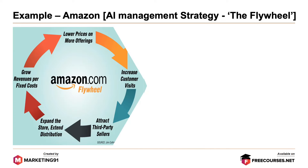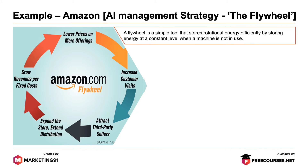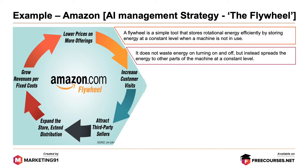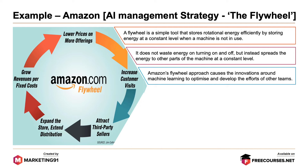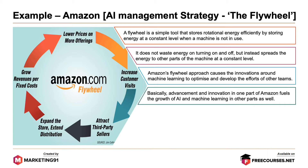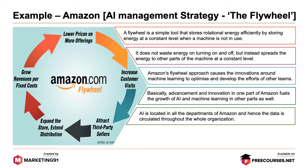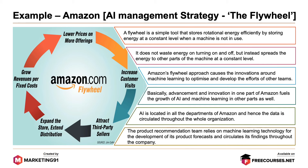Amazon uses an artificial intelligence management strategy called the flywheel. A flywheel is a simple tool that stores rotational energy efficiently by storing energy at a constant level when a machine is not in use. It does not waste energy on turning on and off, but instead spreads the energy to other parts of the machine at a constant level. Amazon's flywheel approach causes the innovations around machine learning to optimize and develop the efforts of other teams. Advancement and innovation in one part of Amazon fuels the growth of AI and machine learning in the other parts as well. AI is located in all the departments of Amazon and hence the data is circulated throughout the whole organization. The product recommendation team relies on machine learning technology for the development of its product forecast and circulates its findings throughout the company.